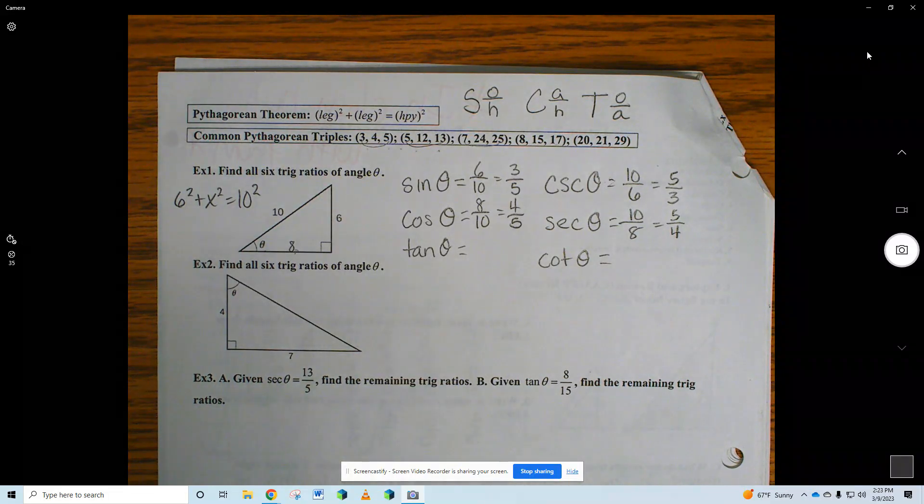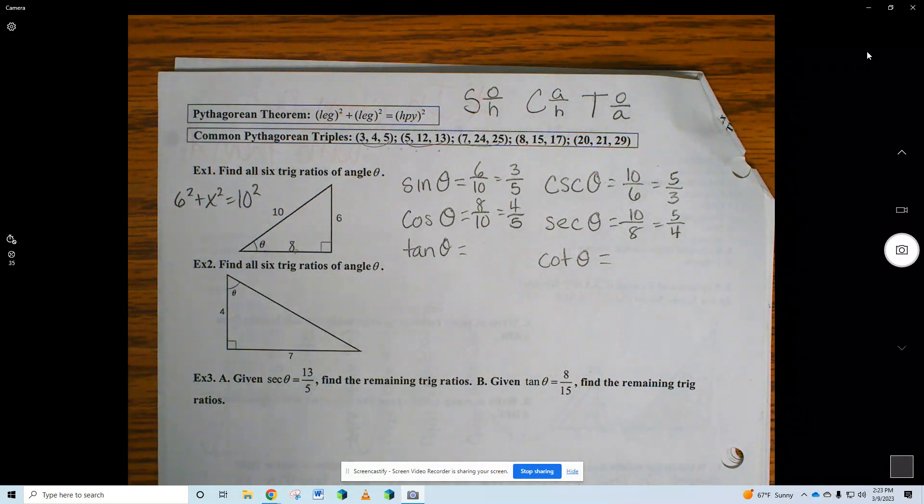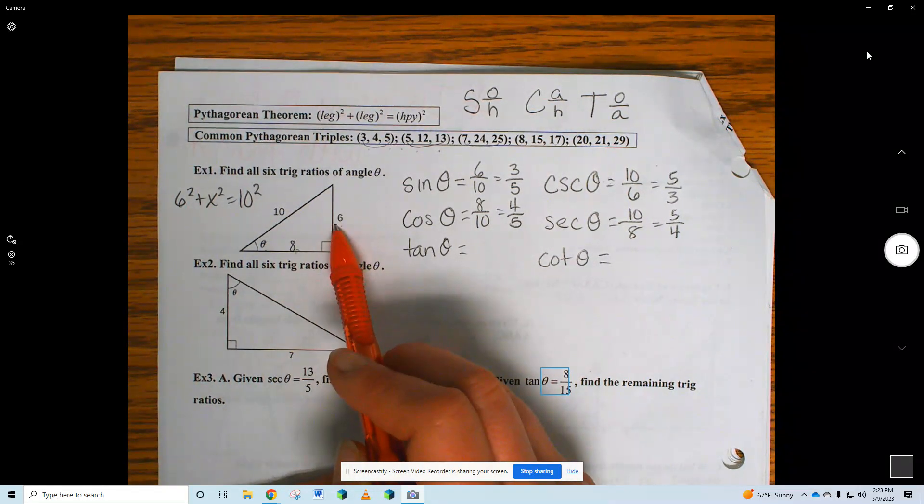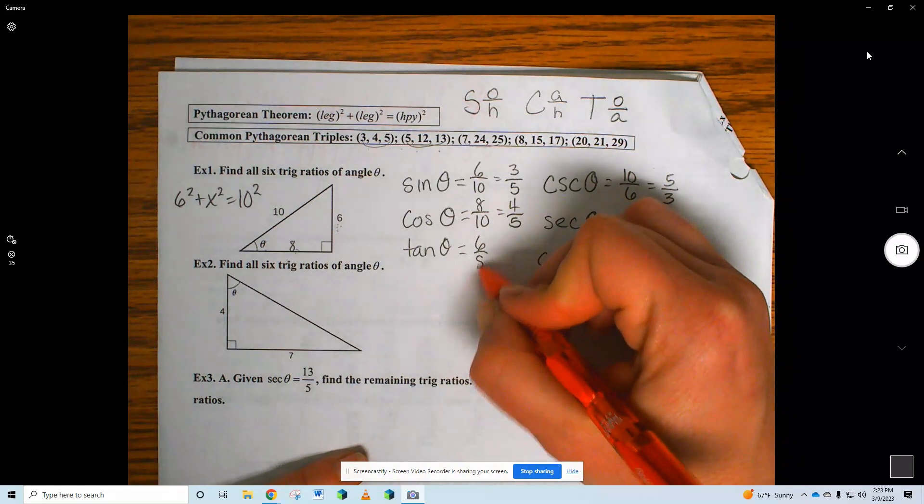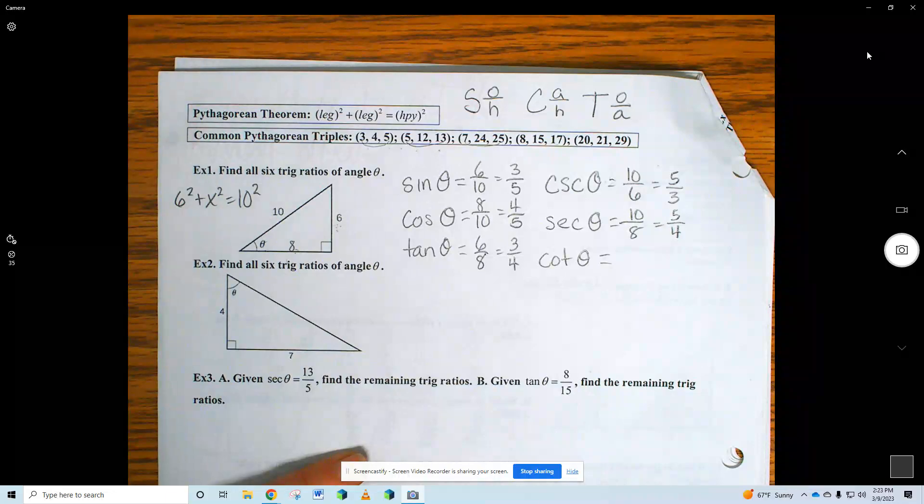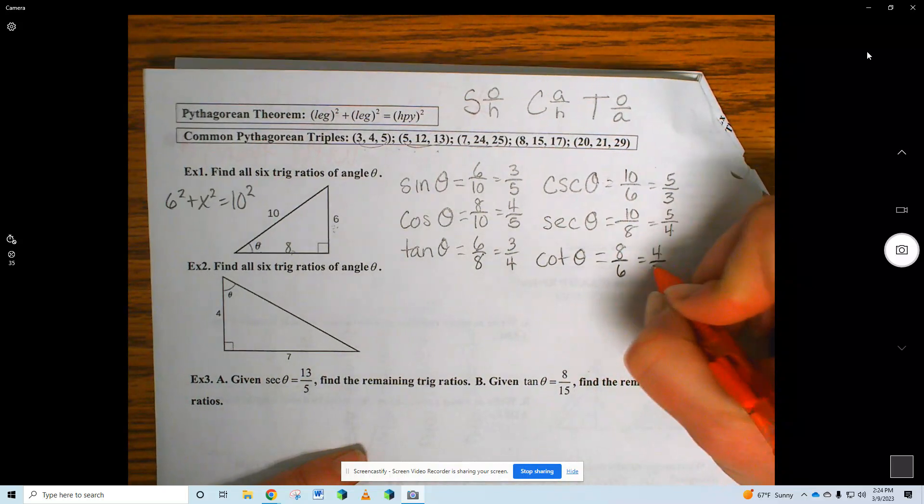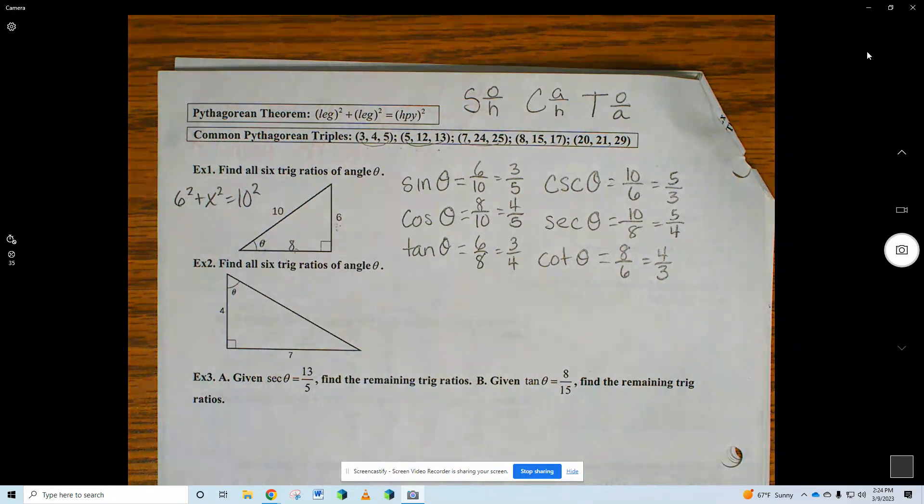Tangent. Tell me what tangent is. Opposite over adjacent. Opposite this angle theta is six. Adjacent is eight. Six over eight. Three-fourths. Cotangent. Reciprocal. Eight over six. Four-thirds. I'm going to skip example two, because it's exactly the same as example one. Got to find the missing side. And then you're just writing fraction answers.